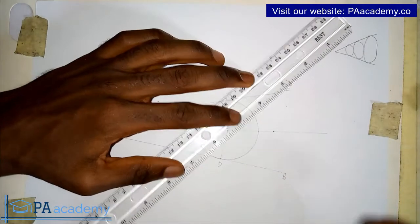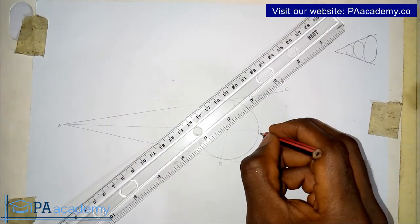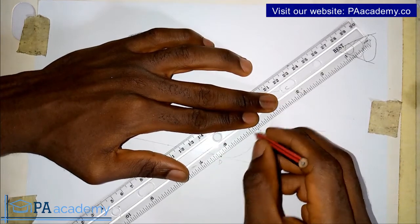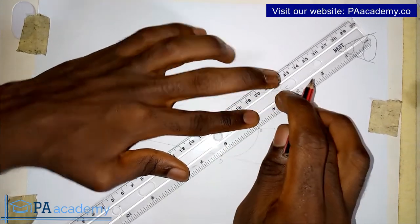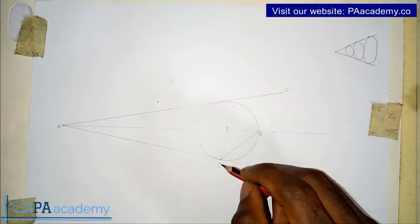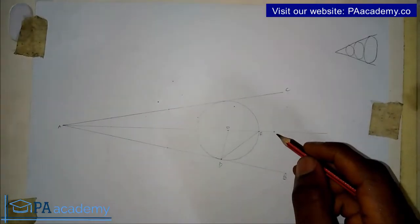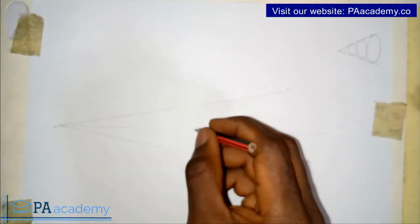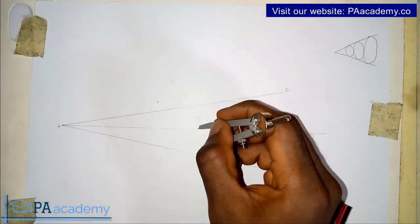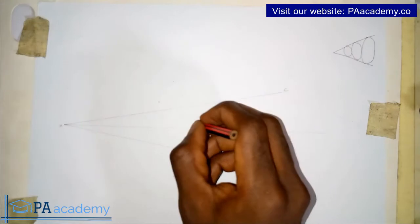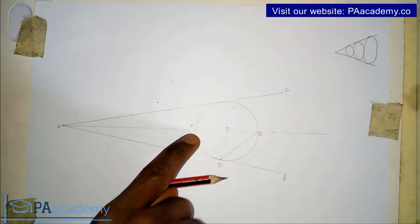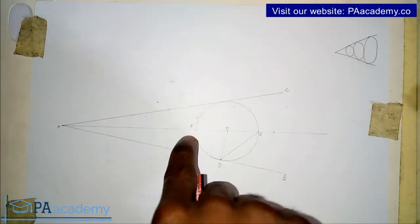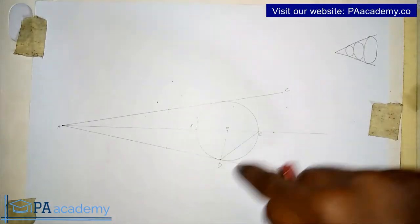The circle touches the bisector at this point — let's call it point E. I'll draw a line from D to E. The next thing to do is draw a line that is parallel to line DE. On the other side where the bisector touches the circle, let's call that point F. You are going to draw a line from point F to somewhere on line AB, parallel to line DE.